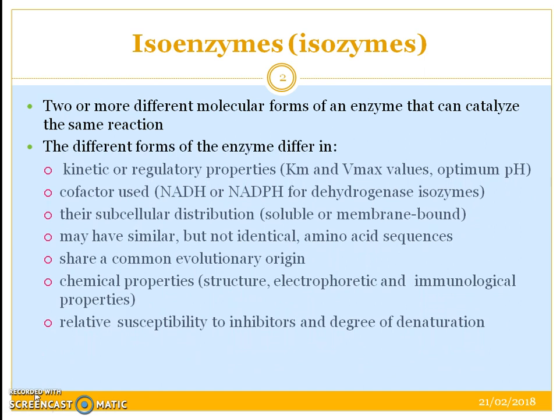The different forms of the enzyme differ in either their kinetic or regulatory properties, which means they can have different Km and Vmax values, optimum pH, the cofactors used — NADH or NADPH can differ. They can have different subcellular distributions, that is they can either be soluble or membrane bound.